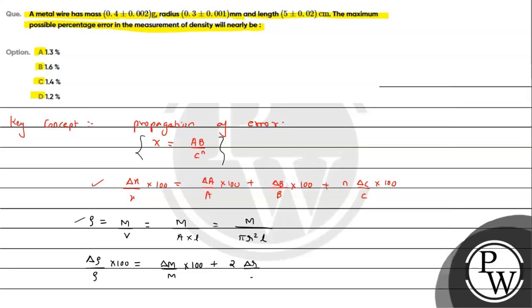So we write delta r upon r plus delta r upon r, plus delta l upon l. This way we need to write the result. Now we can substitute the values and we will be getting the answer.